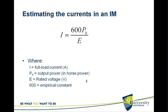The full load current I can be found as 600 × Ph / E, where Ph is the output power in horsepower, E is the rated voltage, and 600 is an empirical constant.